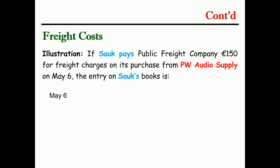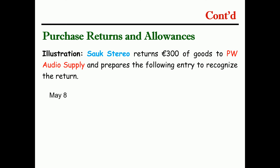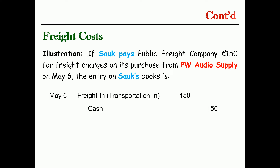Assume that transportation costs will be paid by the buyer. The freight company charges one hundred and twenty dollars for freight charges. When transportation costs are paid by the buyer, that is a freight-in agreement. In the periodic system, you debit transportation-in or freight-in and credit cash. In the perpetual system, transportation-in or freight-in is debited to inventory.